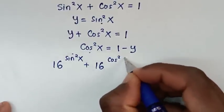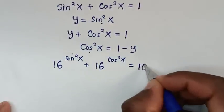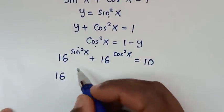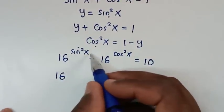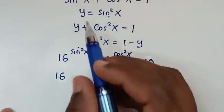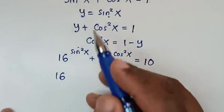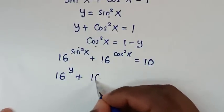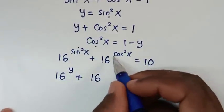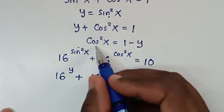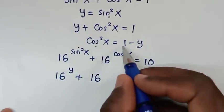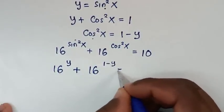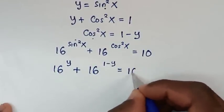So into the powers, sin squared x will be substituted with y and cos squared x will be substituted with 1 minus y. Therefore our problem, which is 16 power of sin squared x plus 16 power of cos squared x equals 10, becomes 16 power of y plus 16 power of (1 minus y) is equal to 10.